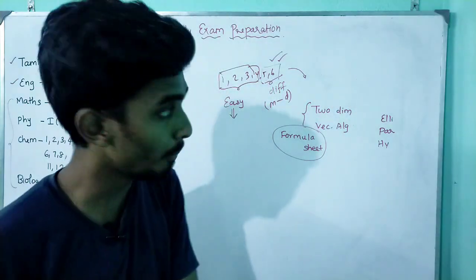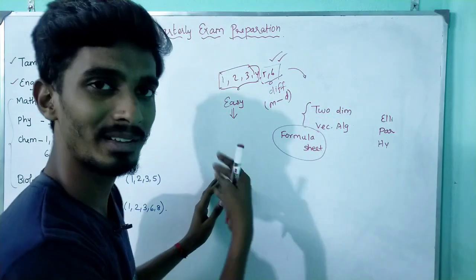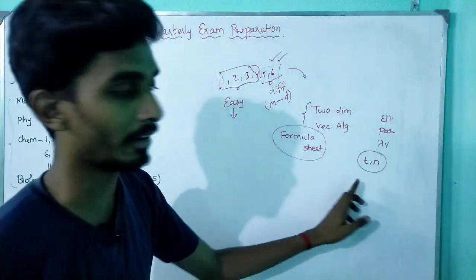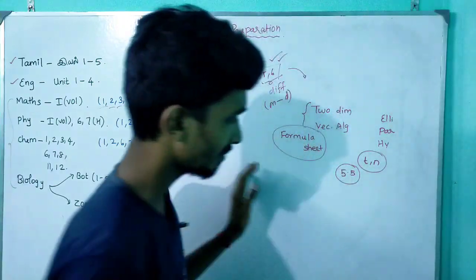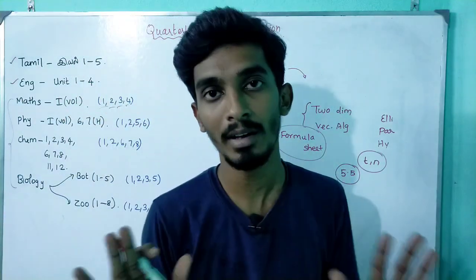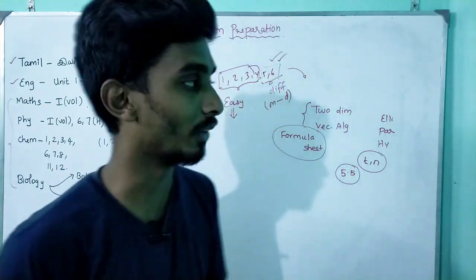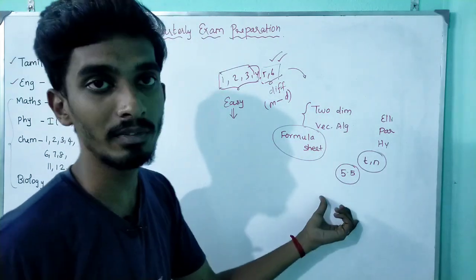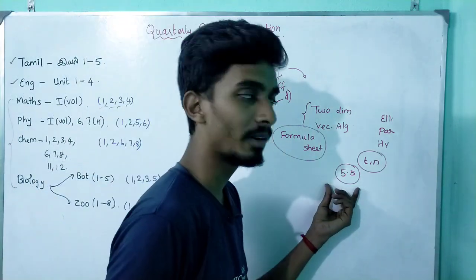If you do the formulas first, you can approach the problems more easily. Section 5.3 and 5.4 — tangent and normal — will also be easier once you know the formulas. Section 5.5 is very important: it is full of word problems and is expected to have 5-mark questions. If you do 5.5, you can do maths very well.